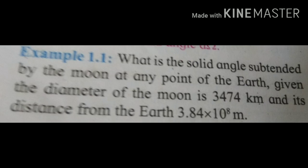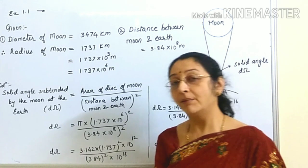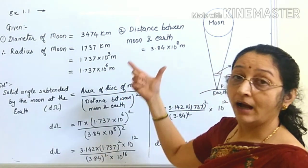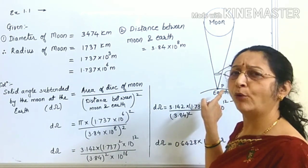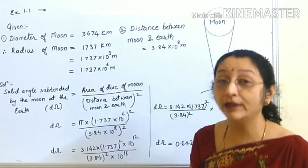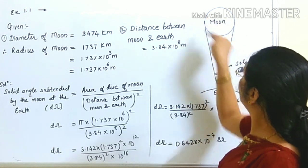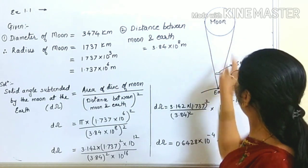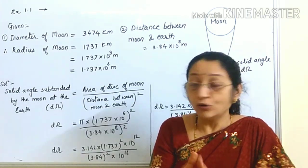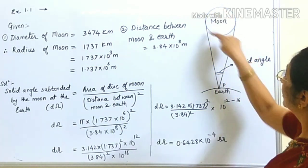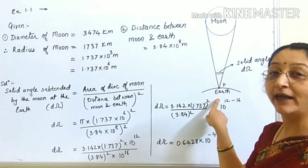What is the solid angle subtended by the moon at any point of the earth, given the diameter of the moon is 3474 km and its distance from the earth is 3.84 × 10⁸ meters? We need to find the solid angle subtended by this disk of the moon at any point on the earth.